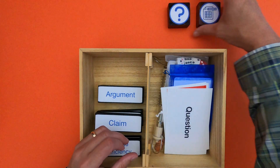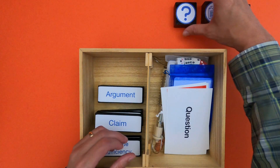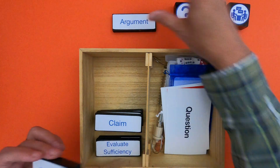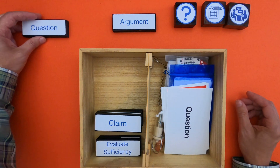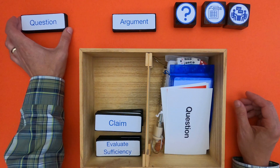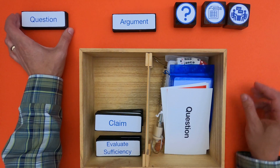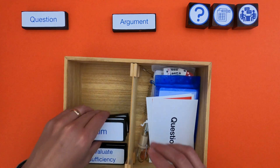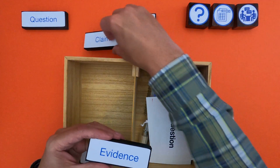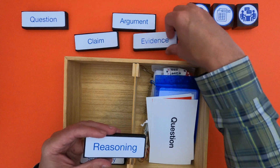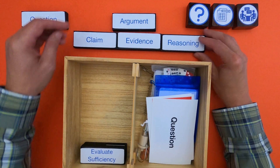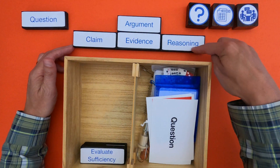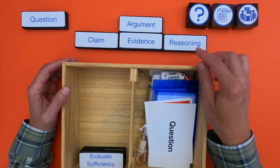Remember, the evidence comes from a question that we're trying to answer, so whenever you're looking at or presenting an argument, the first thing you should always do is figure out what's the question that I'm actually trying to answer — that'll help you in your argument. The next thing you want to do is come up with a claim based on evidence and reasoning.